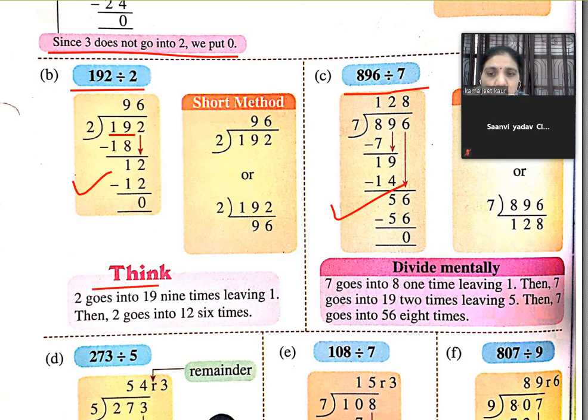Think. 2 goes into 19 nine times leaving 1. Then goes into 12 six times.